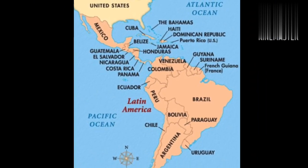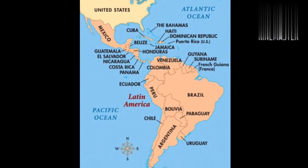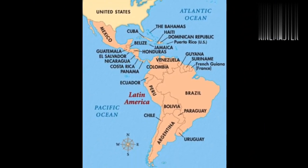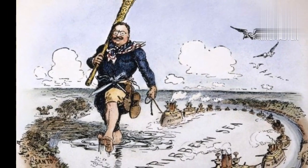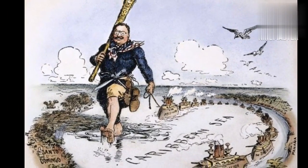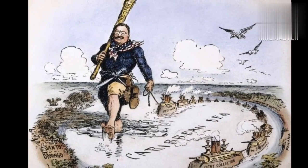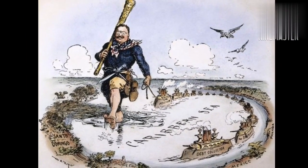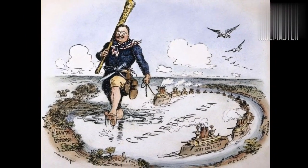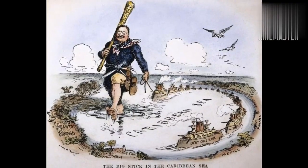In response, the companies began to lobby the U.S. government for military intervention to protect their investments. The U.S. government was sympathetic to the fruit companies' cause, and in 1903, President Theodore Roosevelt issued the Roosevelt Corollary to the Monroe Doctrine, which gave the U.S. the right to intervene in Latin American countries to maintain stability and protect American interests.